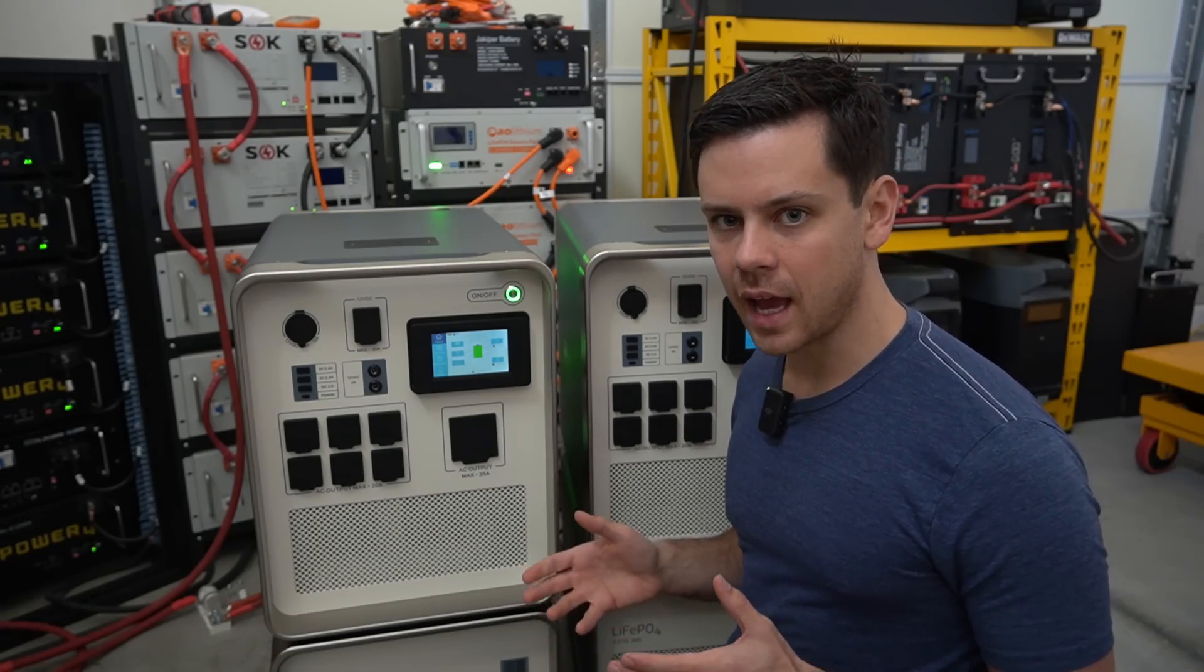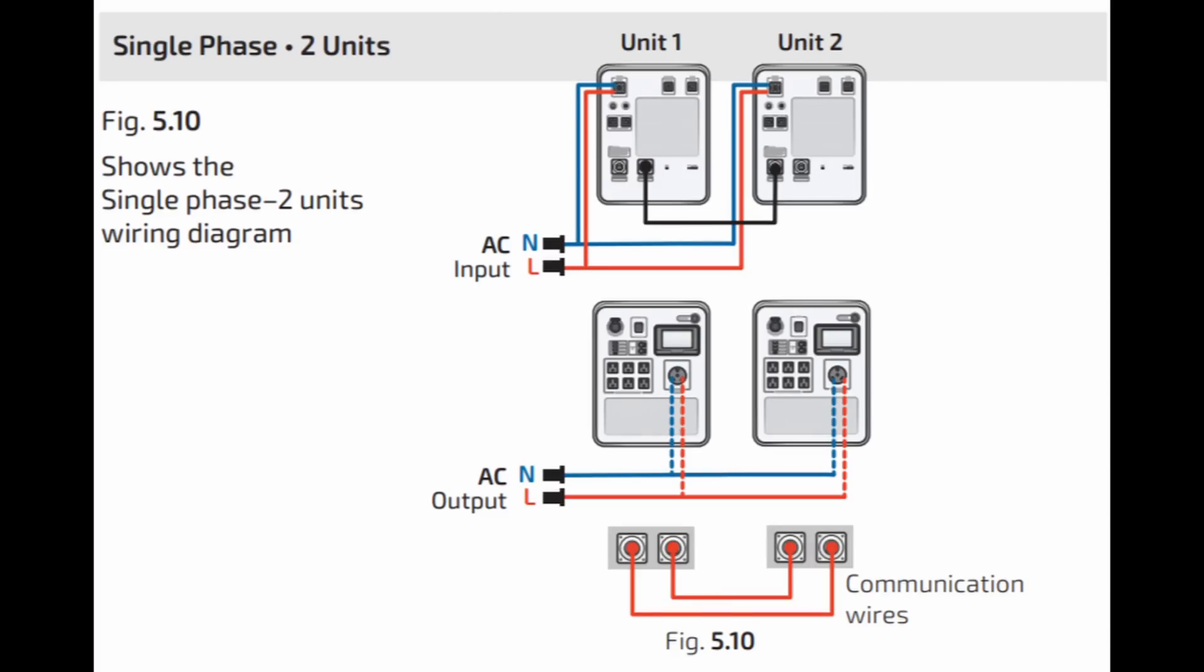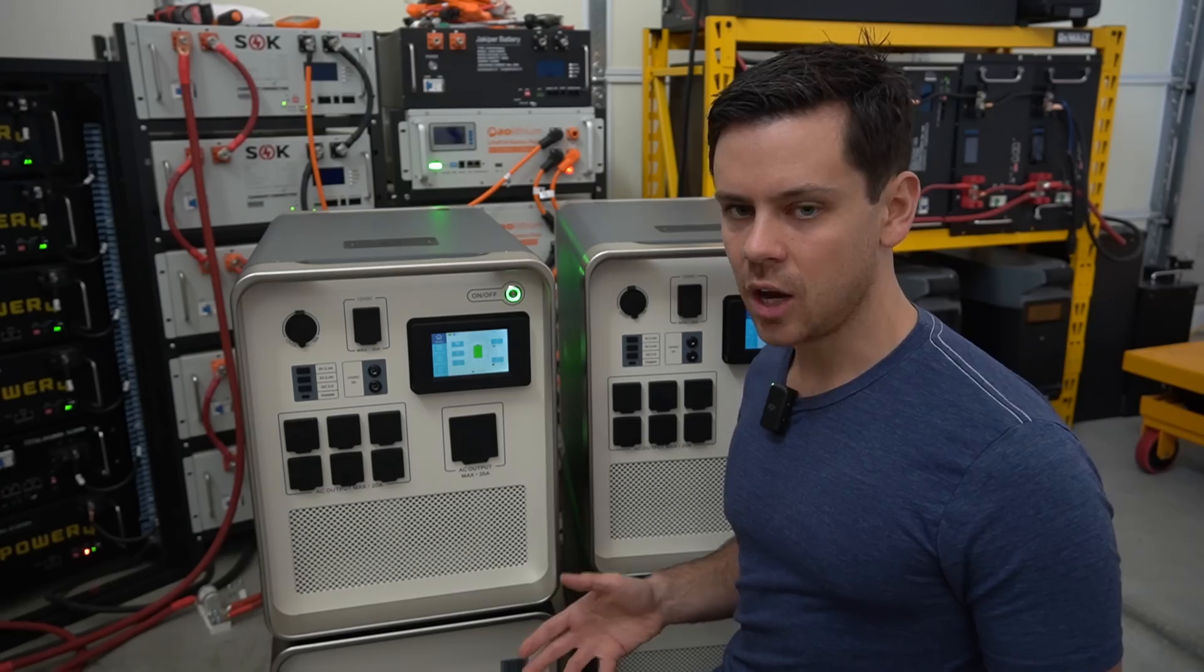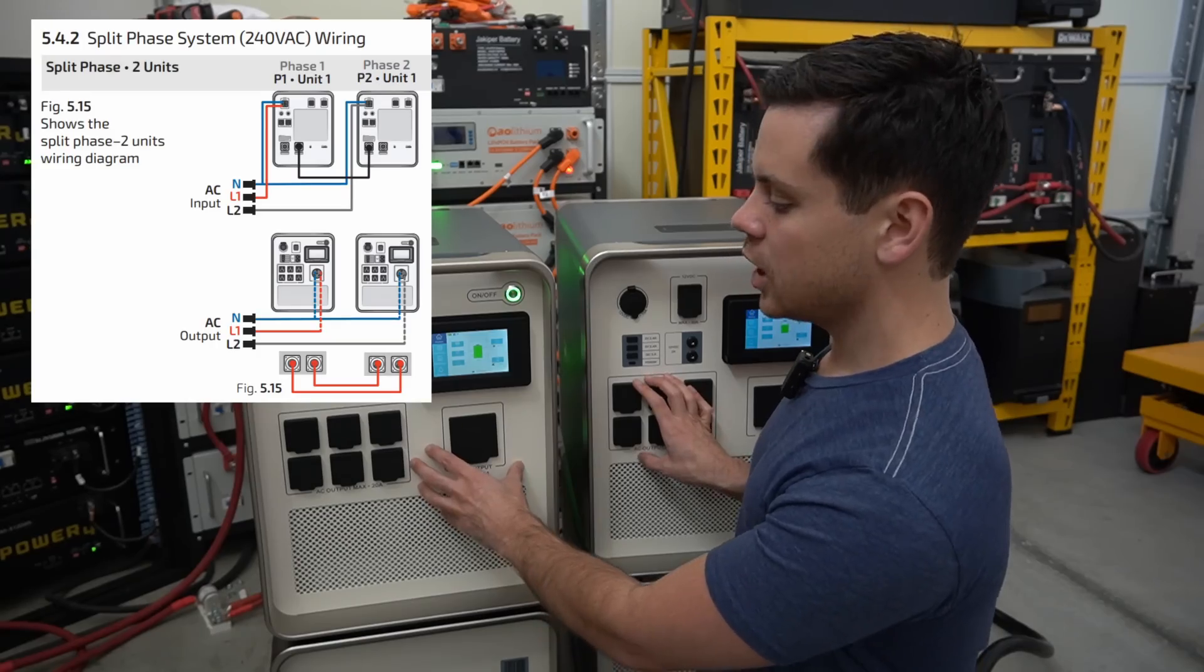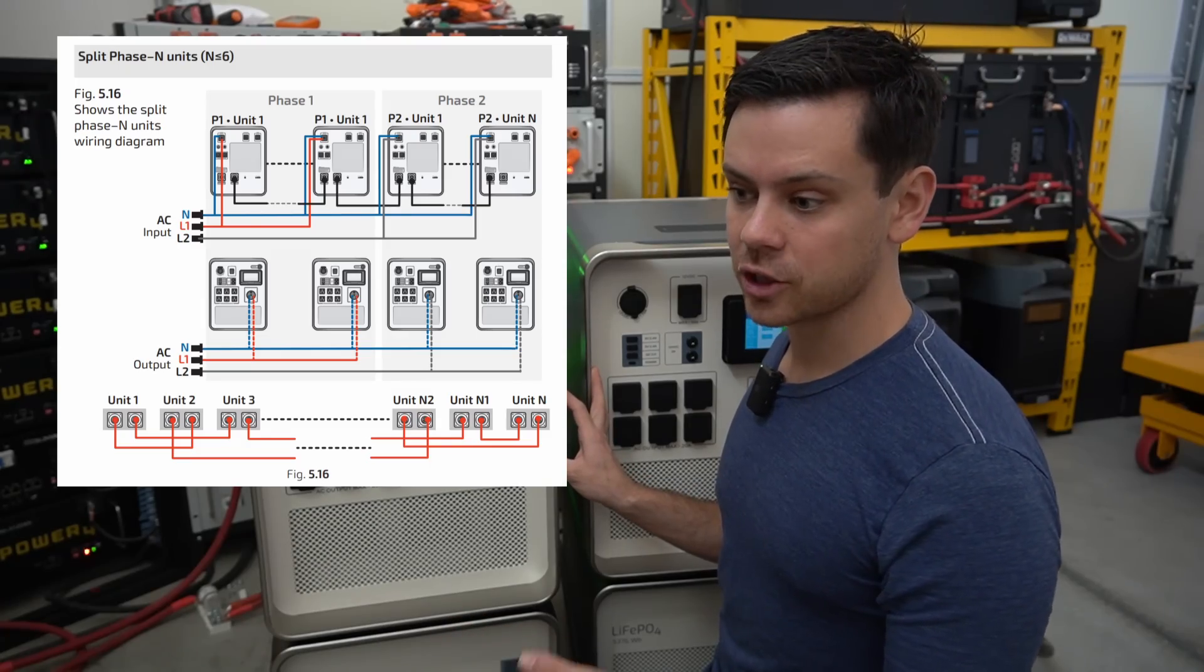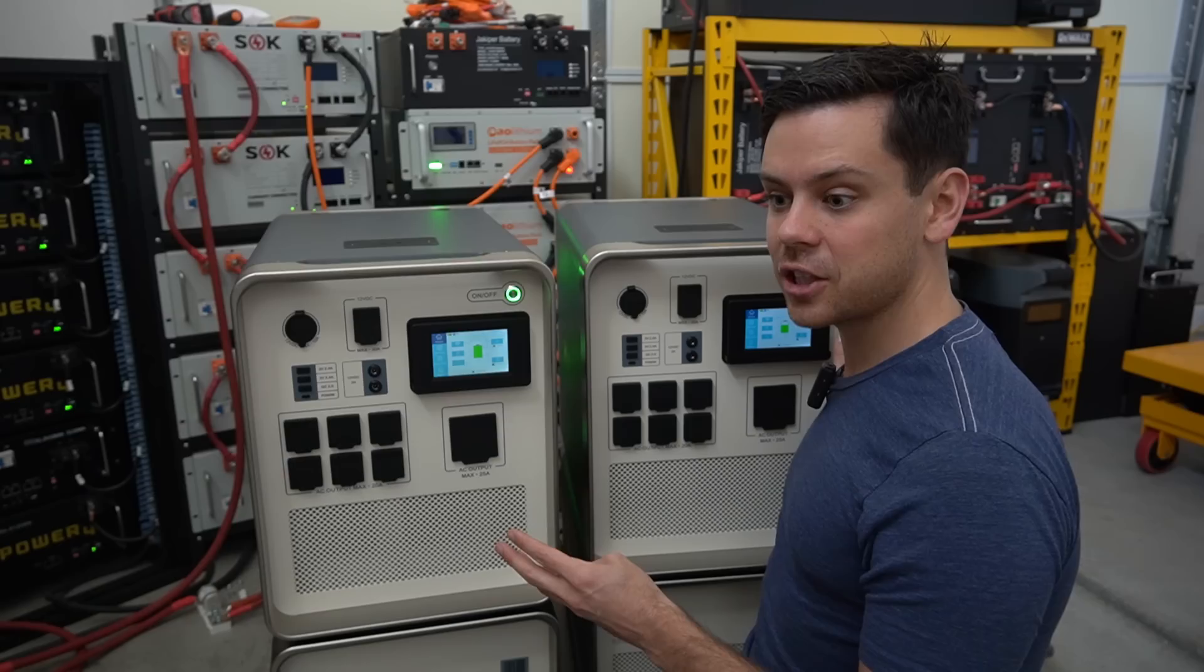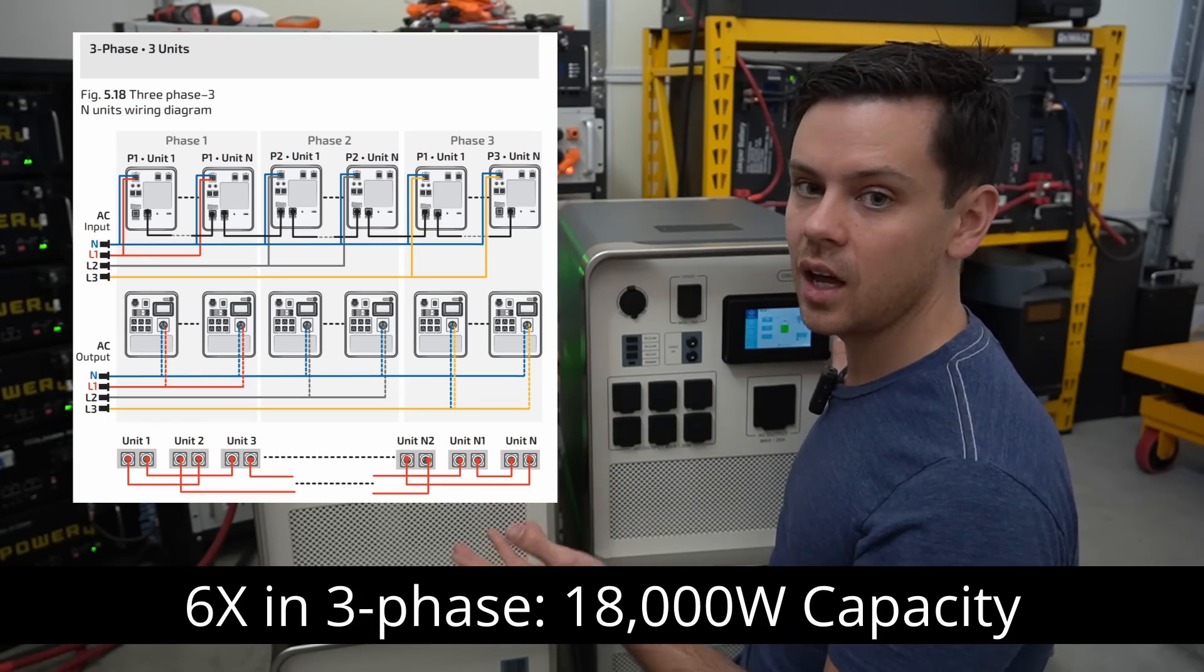So first configuration is paralleling the outputs, and this is if you have large 120 volt loads. You could put two, three, upwards to six units into parallel for a total output capacity of 18,000 watts at 120 volts. Next configuration is split phase, and what that means is the output is in series so you can have 120 and 240 volt. If you have two units you can have 6,000 watt output capacity, but if you have four you can have 6,000 watts on each leg for a total output capacity of 12,000 watts. Next if you have three phase and you have three units you can do 3,000 watts on each leg, or you can have six units in three phase so that you have 6,000 watts on each leg for a total output capacity of 18,000 watts.